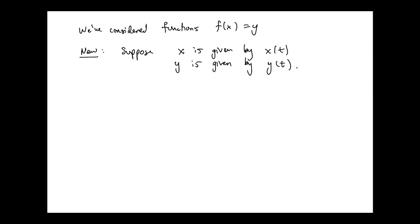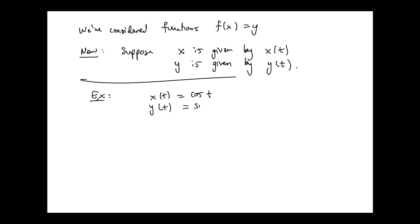Part of the reason we use t is we think about time — the motion of a point moving through the plane over time. For example, let's take an easy example: x = cos(t), y = sin(t). So we make the x-coordinate depend on cosine of t, and the y-coordinate depend on sine of t. How do I graph this? Think back to when you first learned to graph functions in algebra class.